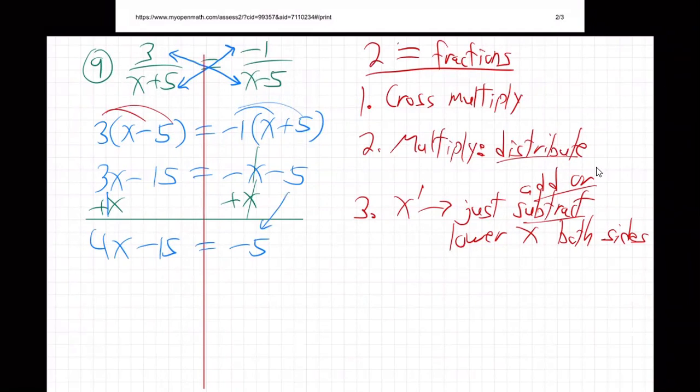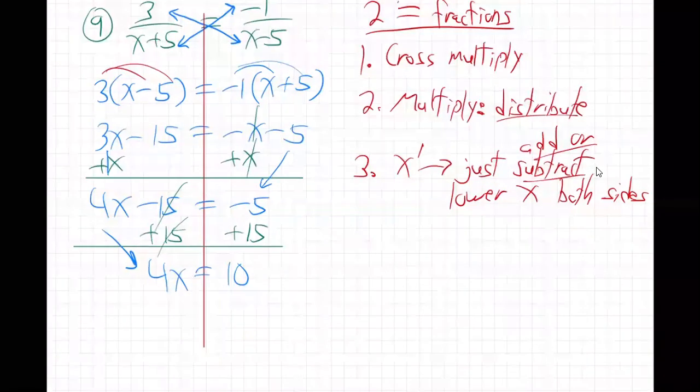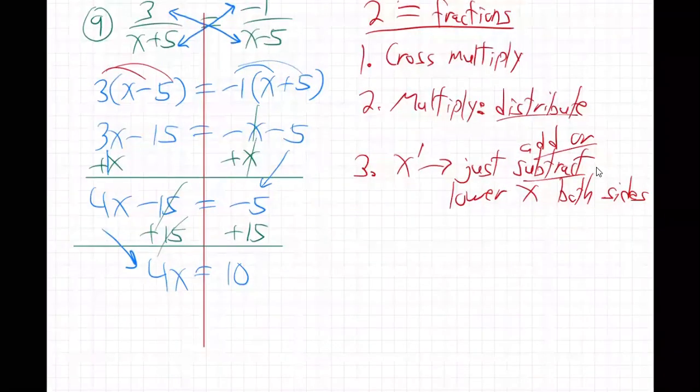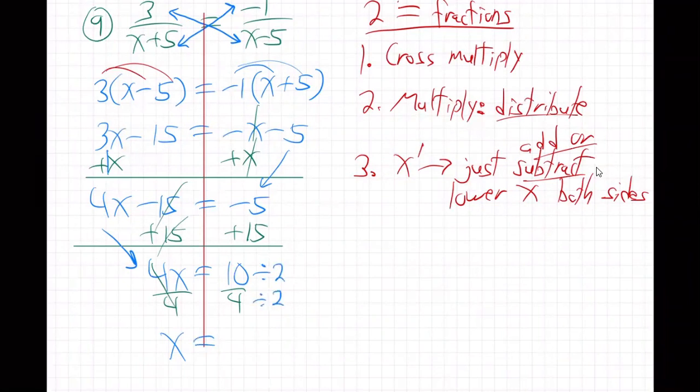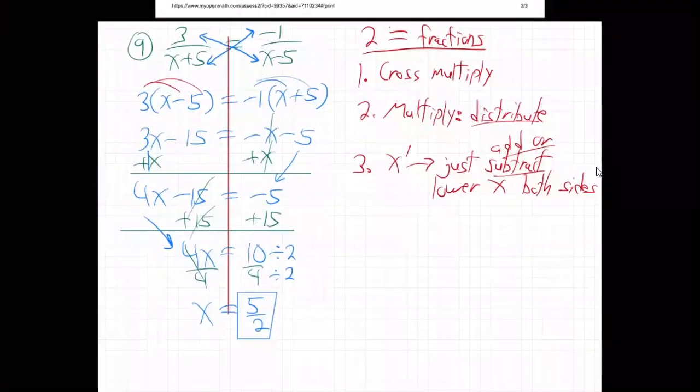And then just finish getting x alone. So add fifteen to that. And we get four x equals ten, like so. And then last step, it's always divide, right? So always divide. And so x, we got to reduce that fraction. All fractions must be reduced. Five halves. So the answer to that one would be five halves.